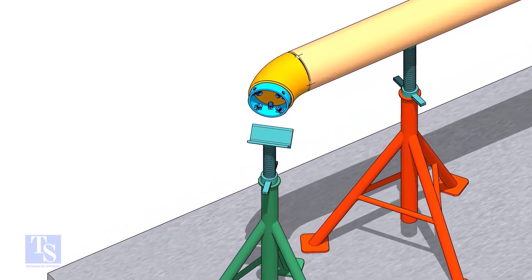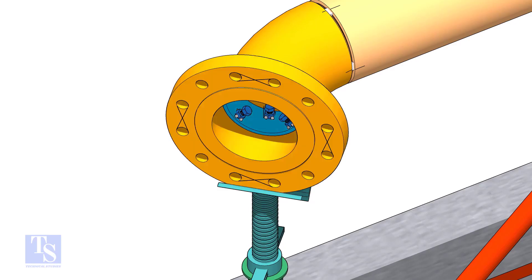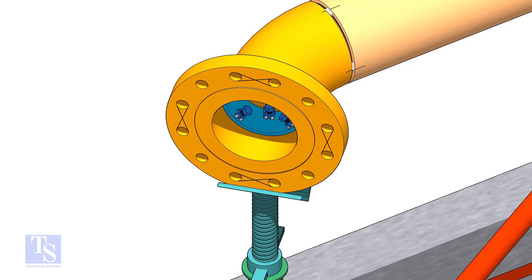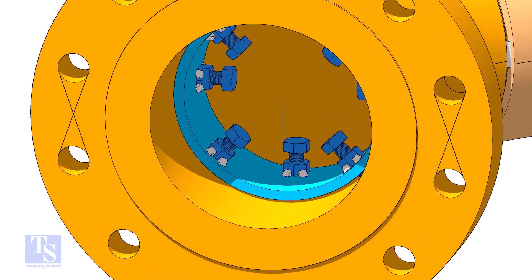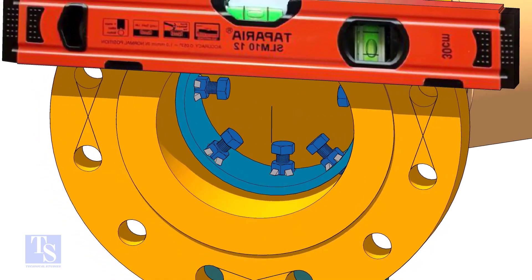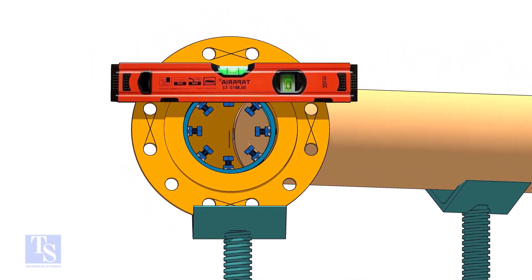Put the clamp in the elbow and tighten lightly. Put the flange in its position and maintain the level. Tighten the clamp bolts lightly.